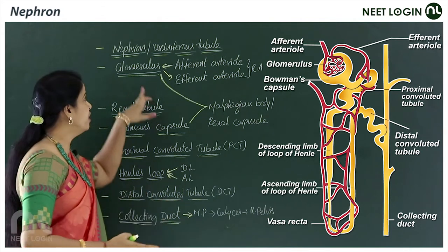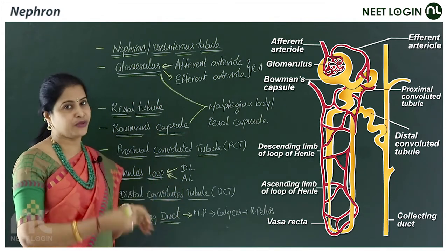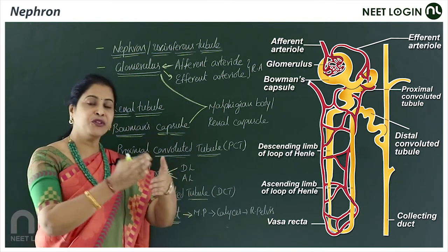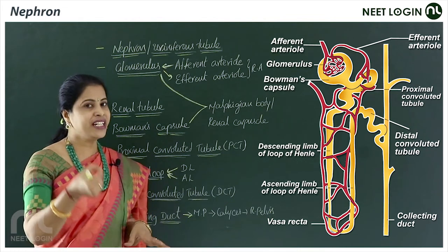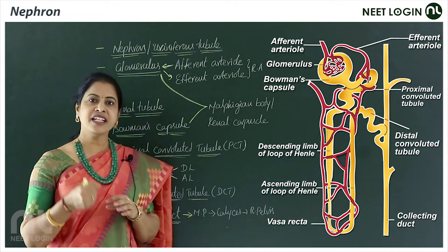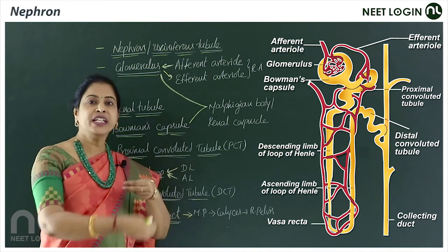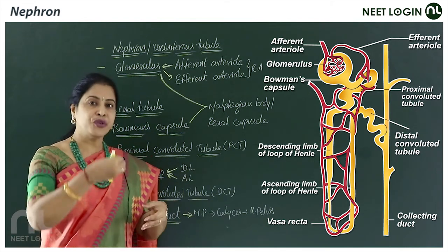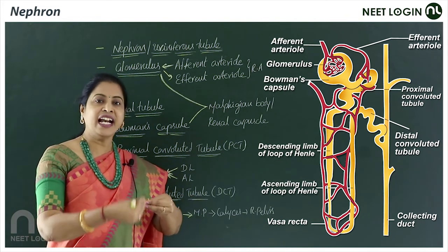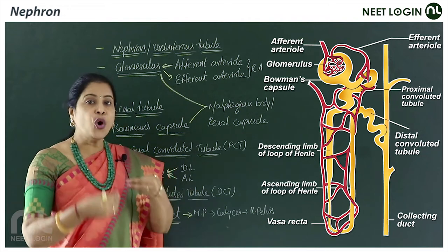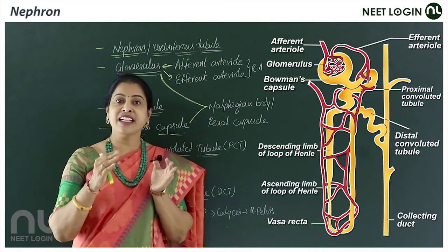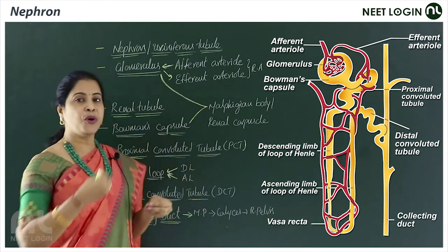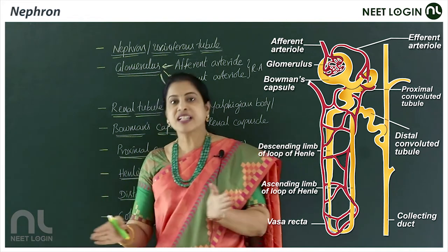The nephron consists of two main parts: the glomerulus and the renal tubule. The blood vessel that brings blood to the kidneys for filtration is the renal artery, which is rich in urea. Urea synthesized in the liver is brought to the kidneys for elimination. Some nitrogenous wastes are stored in the medullary interstitial fluid to maintain the osmolarity gradient.